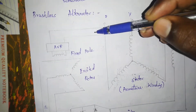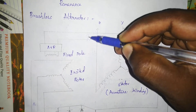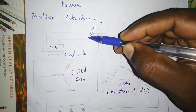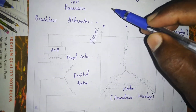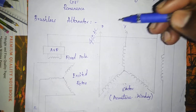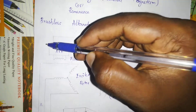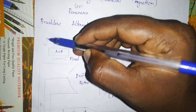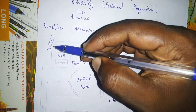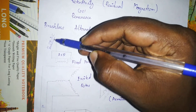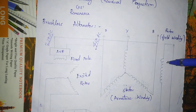We have 440V AC input. 440V AC is needed. We have a transformer, and for the transformer we step down to 220V or 240V. We have a field winding that requires DC.